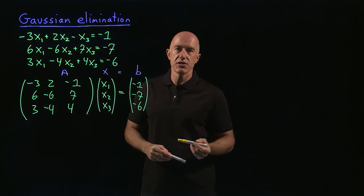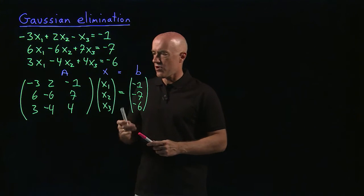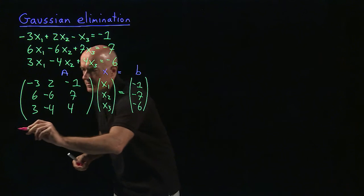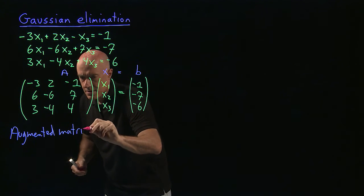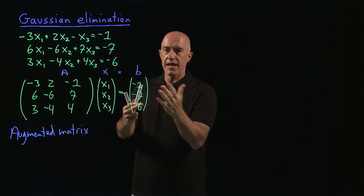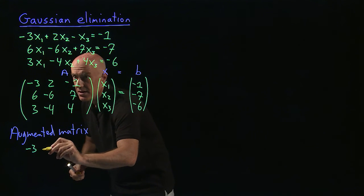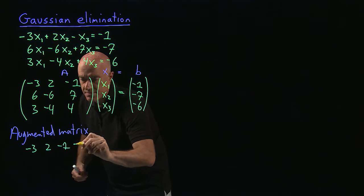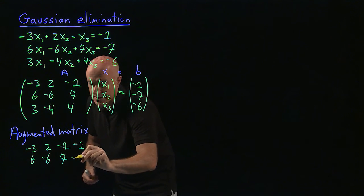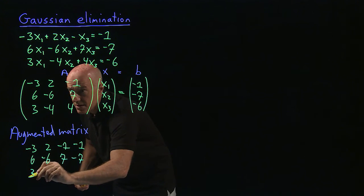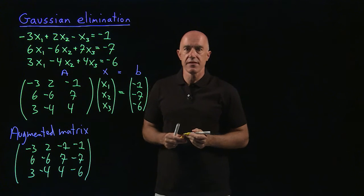So what is the Gaussian elimination algorithm? The first step is to form what's called the augmented matrix. That's our A matrix with the right-hand side B attached as the last column. So that's the matrix: minus three, two, minus one — and we attach minus one; six, minus six, seven — and we attach minus seven; three, minus four, four — and we attach minus six. That's called the augmented matrix.